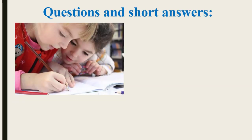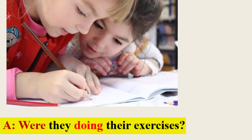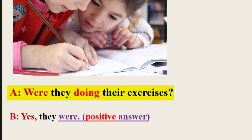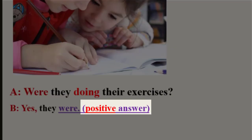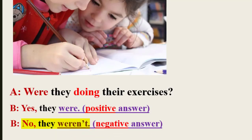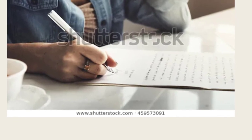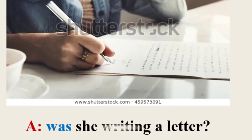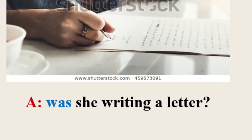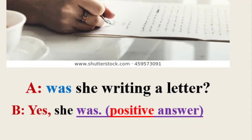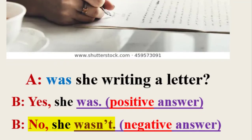Questions and short answers with the past continuous. Dialogue 1: Were they doing their exercises? Yes, they were. (positive answer) / No, they weren't. (negative answer). Dialogue 2: Was she writing a letter? Yes, she was. (positive answer) / No, she wasn't. (negative answer).